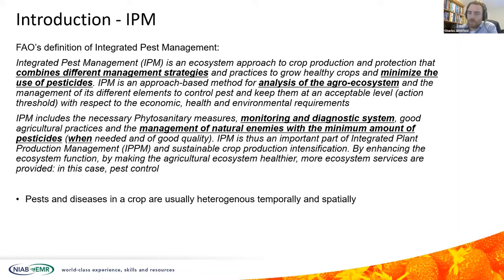The FAO definition talks about combining different management strategies, minimizing the use of pesticides, analyzing the agro-ecosystem — the cropped land and all that is within it. It talks about using monitoring and diagnostic systems, the management of natural enemies with the minimum use of pesticides, which should be applied only when needed. But I would argue there is a very important word missing here, which is where.